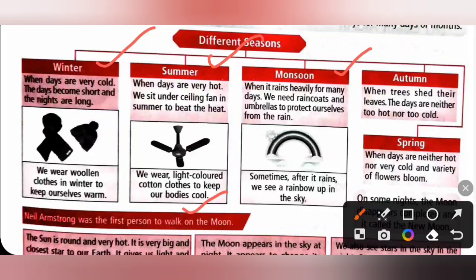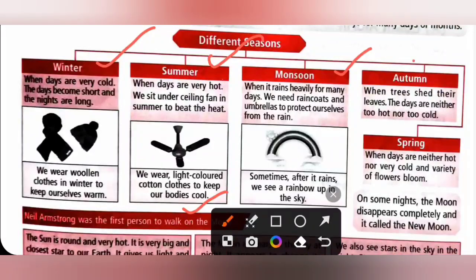Monsoon — when it rains heavily for many days, we need raincoats and umbrellas to protect ourselves from the rain. Sometimes after it rains, we see a rainbow up in the sky. Autumn — when trees shed their leaves, the days are neither too hot nor too cold. Next, spring — when days are neither hot nor very cold and a variety of flowers bloom.